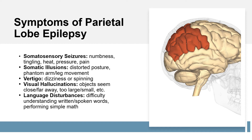Visual hallucinations are also a side effect of somatosensory seizures. Chronic pain, triggered by the central nervous system, as well as vertigo, are also associated with parietal lobe epilepsy. Patients with parietal lobe epilepsy can exhibit language disturbance, typically associated with the frontal lobe. Difficulty in understanding written words, speech, and performing simple math are some common symptoms.